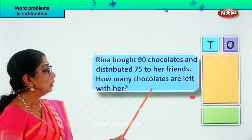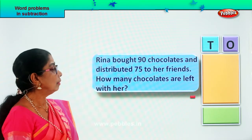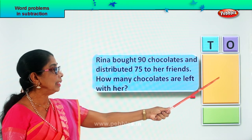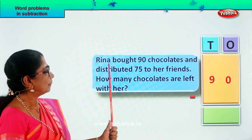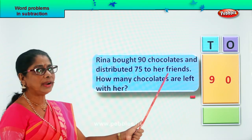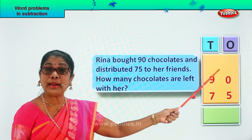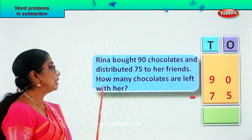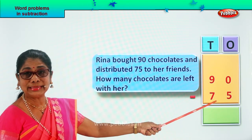That is what we have to find out. The number of chocolates Rina bought is 90 — that's 9 tens, 0 ones. She distributed 75 to her friends. So from 90 chocolates, take away 75. That will give you the answer — how many chocolates are left with Rina? Now we have arranged the numbers. Let's do the minusing and get the answer.